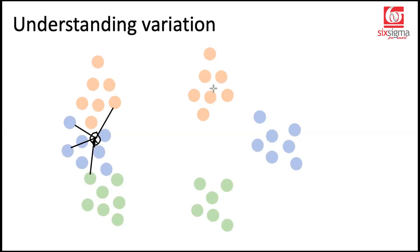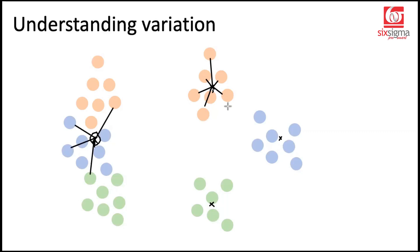Now let's move on to the idea of within-group variation — pretty similar. You're looking at a particular group and calculating the group average. You connect every single point within a group with this mean and sum up the squared distances. That's called the sum of squares within. You do this for each group and add the results for all groups. So this is the sum of squares within.